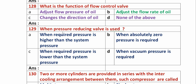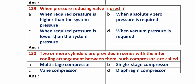Question 129: When is a pressure reducing valve used? Option A: when required pressure is higher than system pressure. Option B: when absolutely zero pressure is required. Option C: when required pressure is lower than system pressure. Option D: when vacuum pressure is required. The main function of a pressure reducing valve is to reduce pressure. So option C, when required pressure is lower than system pressure, is the right answer.